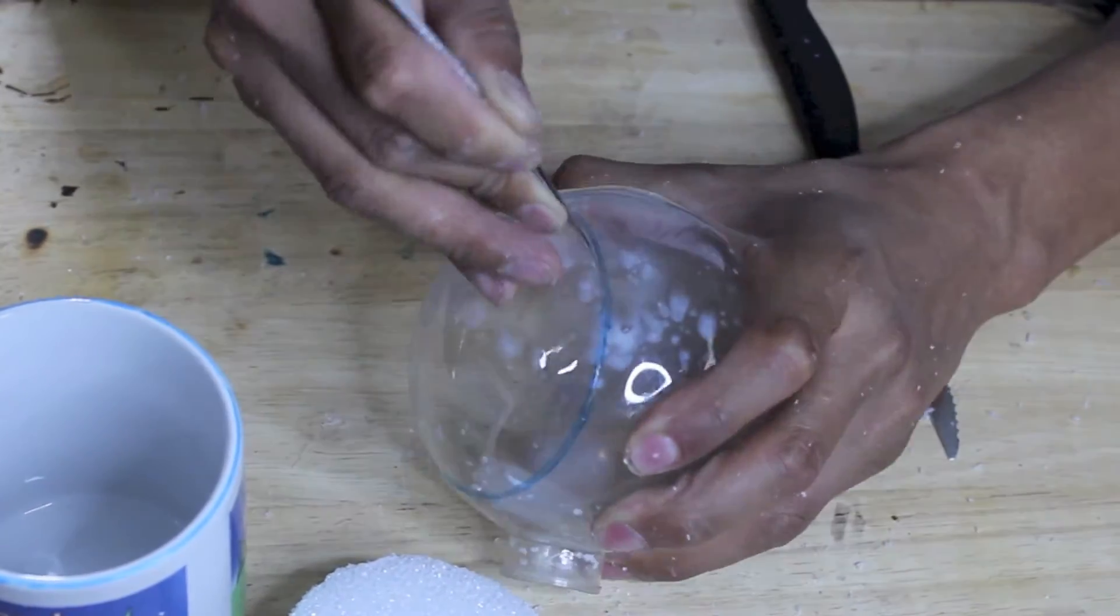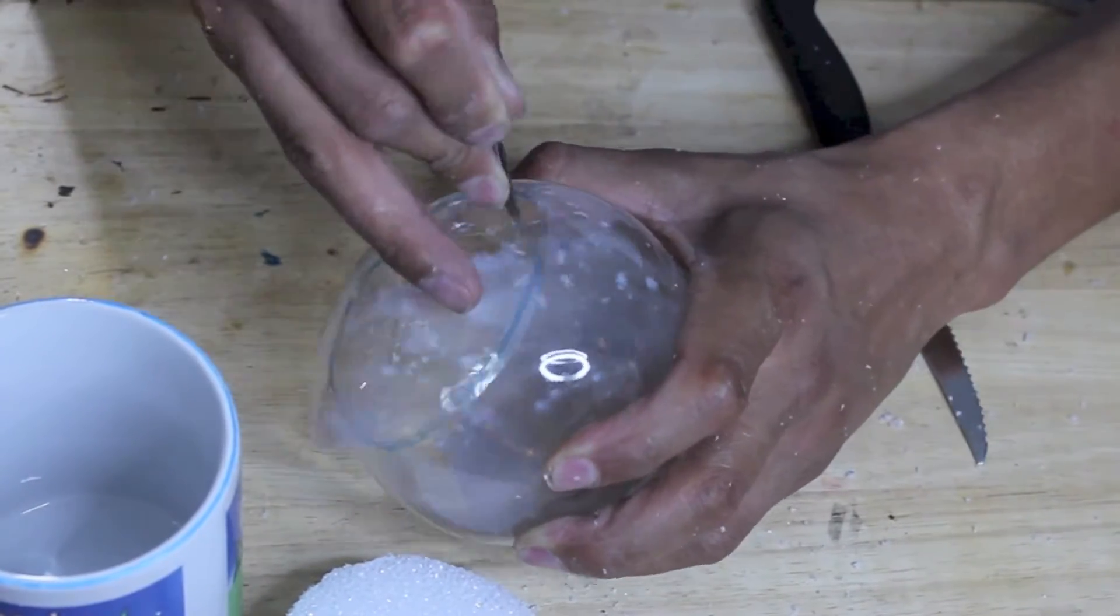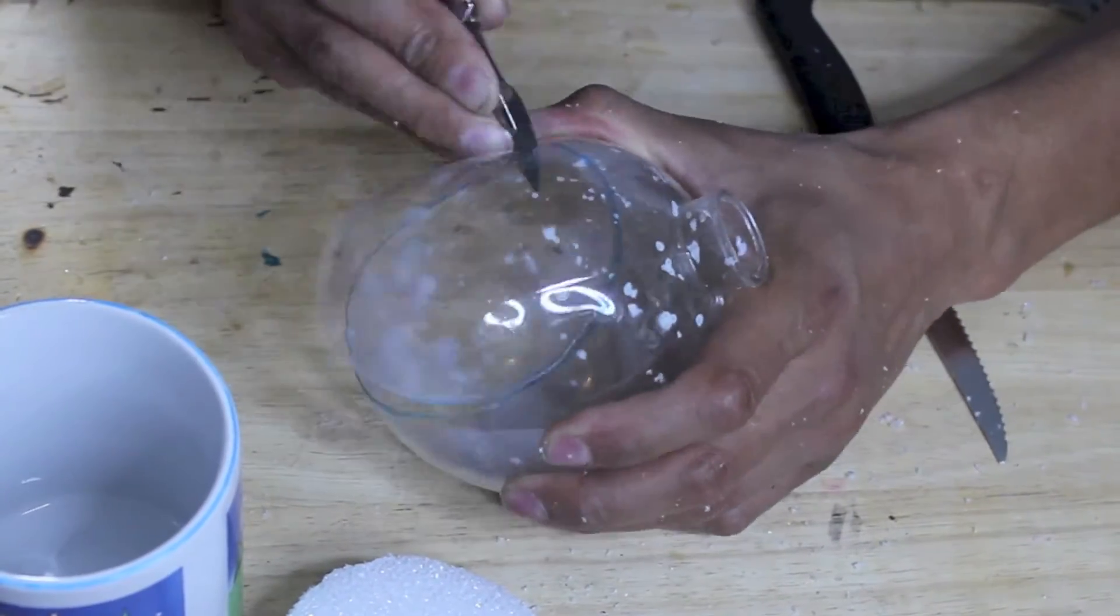Then take your exacto knife and carefully cut out that circle piece from the clear ornament.